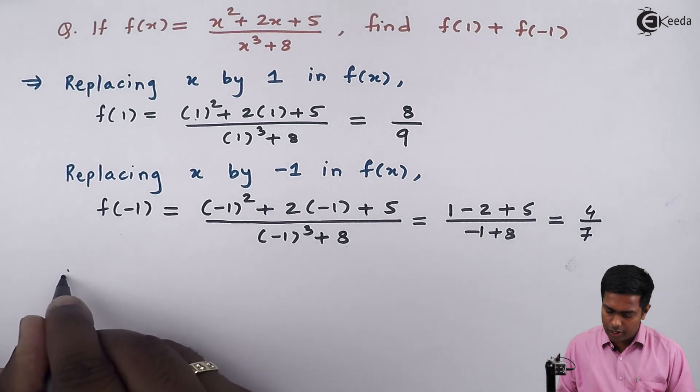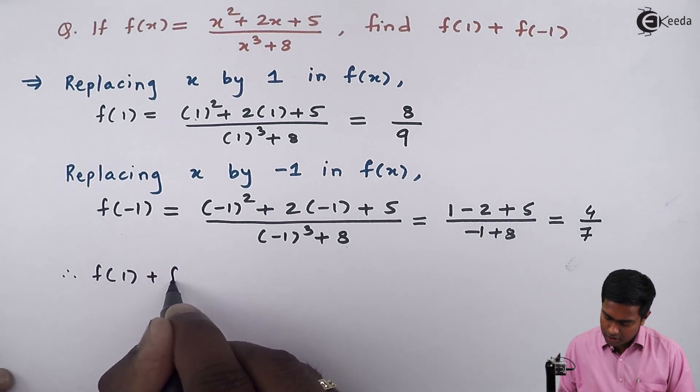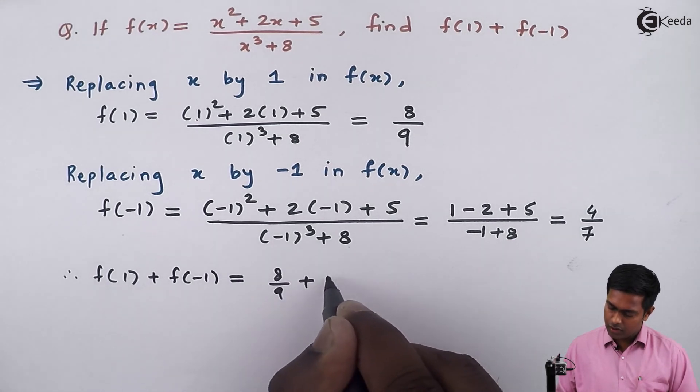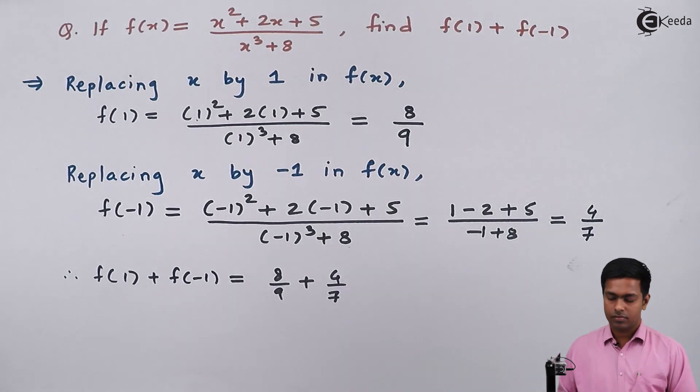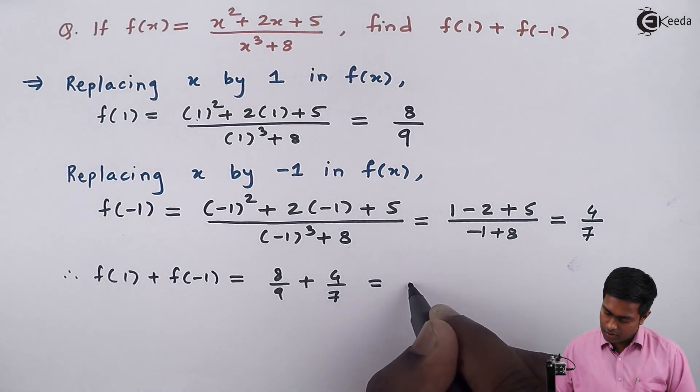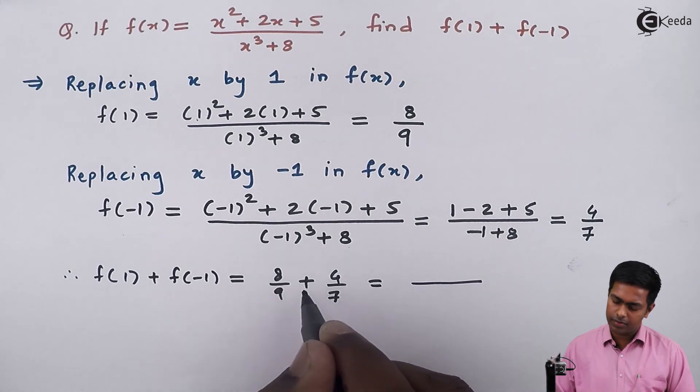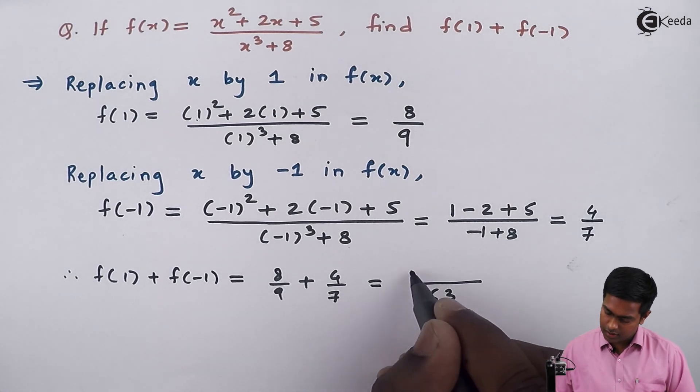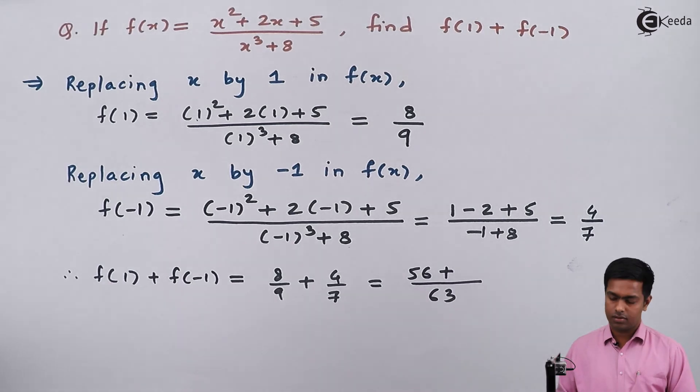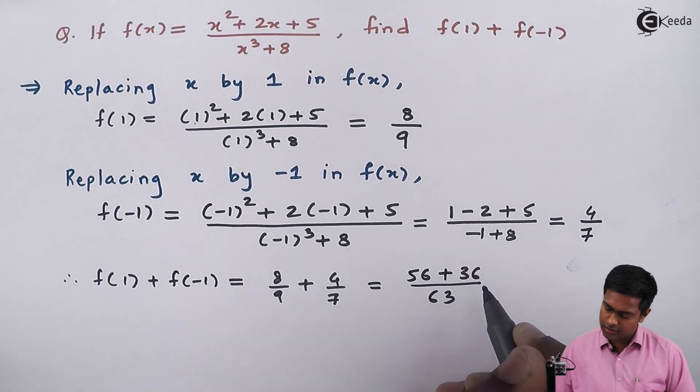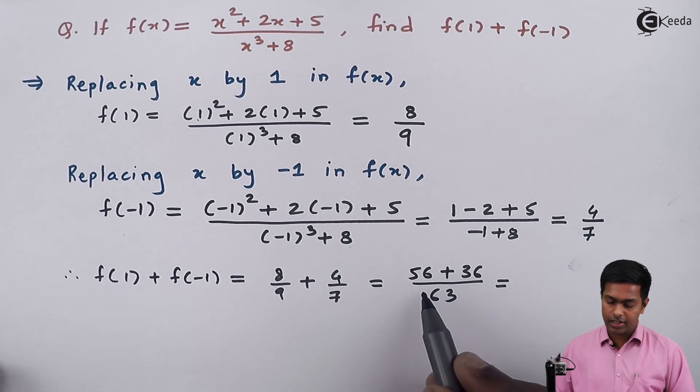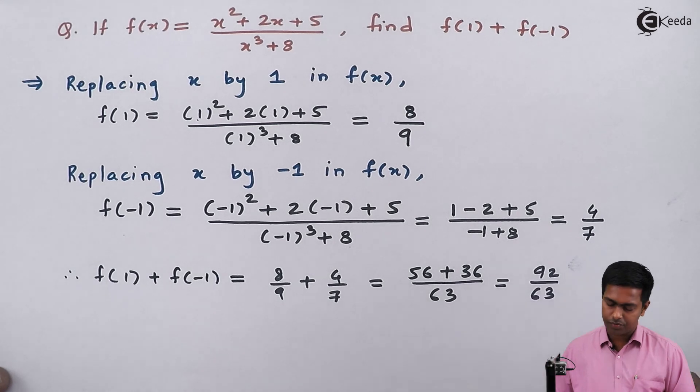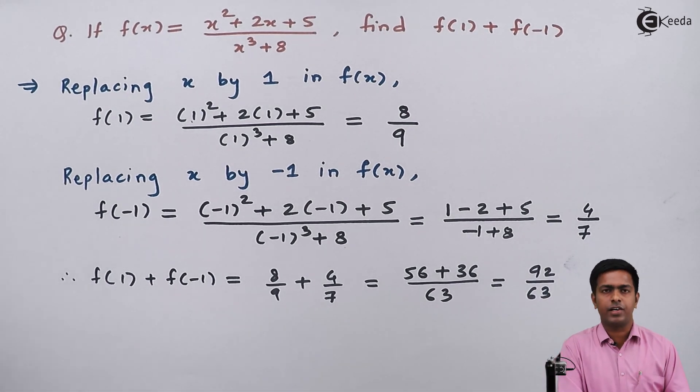Now let's find the result. Therefore, f(1) + f(-1) = 8/9 + 4/7. Taking the LCM, we get 63. This becomes (8×7 + 9×4)/63 = (56 + 36)/63 = 92/63. Hence, the answer is 92/63.